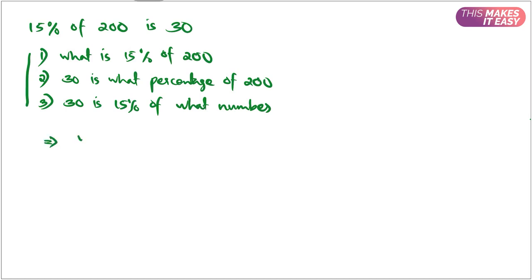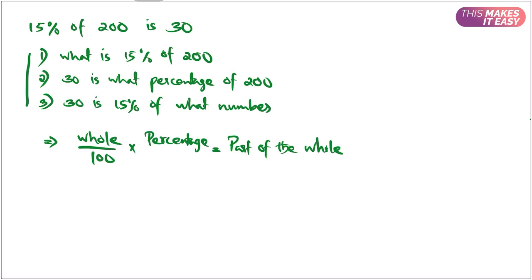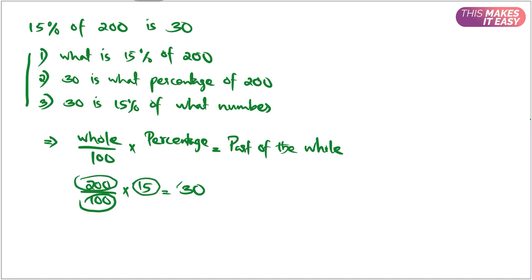The theory behind it is: World divided by 100, multiplied by percentage, is equal to the part of the world. So according to our example, the world is 200, divided by 100, multiplied by the percentage which is 15, and the part of the world is 30. Here 100 is constant — it will be the same every time. And there are three numbers: 200, 15, and 30. If you know any two of them, we can solve for the third one very easily using cross multiplication.